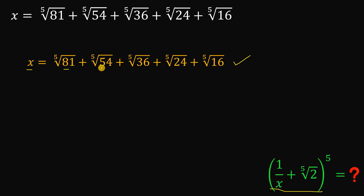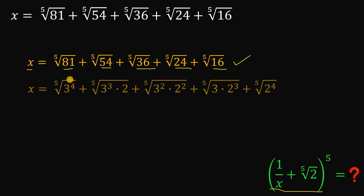Let's focus on the numbers 81, 54, 36, 24, and 16. We can rewrite them as: 81 is 3 to the fourth power, 54 is 3 cubed times 2, 36 is 3 squared times 2 squared, 24 is 3 times 2 cubed, and 16 is 2 to the fourth power.